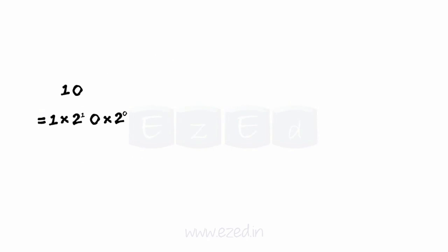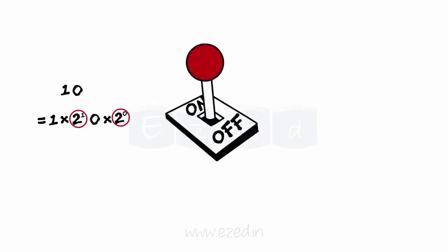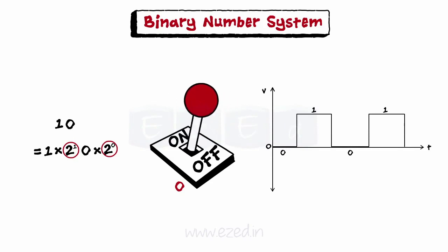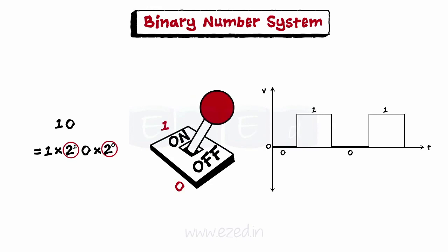Each position in the binary number system represents a power of base 2. The rightmost position is 2 raised to 0, which equals 1, and the second position is 2 raised to 1, and so on. In the binary number system, digit 0 represents the off or low state, and digit 1 represents the on or high state.